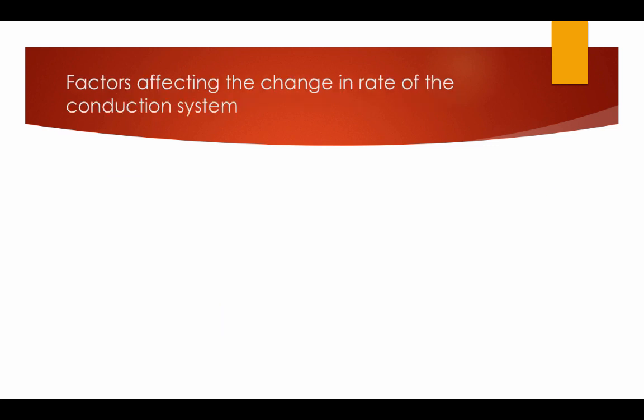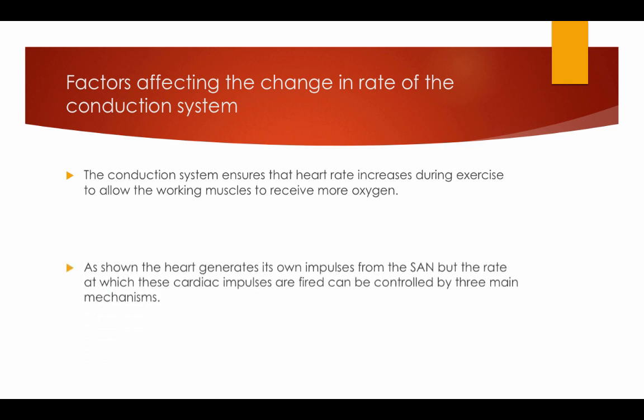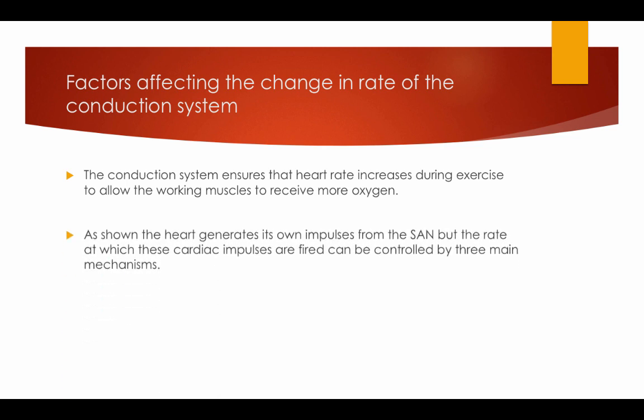Factors affecting the change in the rate of the conduction system. The conduction system ensures that the heart rate increases during exercise to allow the working muscles to receive more oxygen. The heart generates its own impulses from the SAN, but the rate at which these cardiac impulses are fired can be controlled by three main mechanisms.